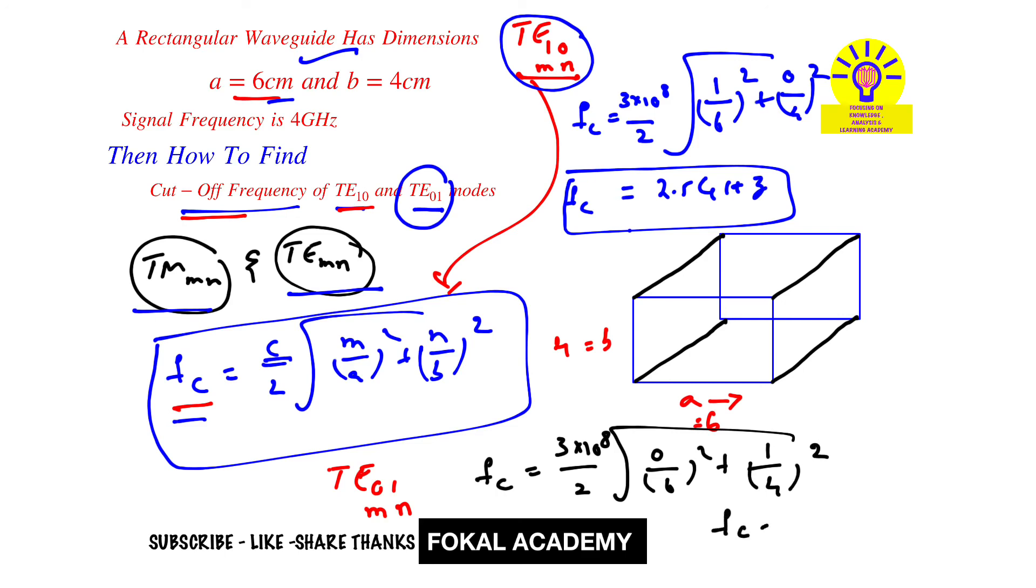By simplifying this, we get fc = 3.75 gigahertz. This is the cutoff frequency for TE01 mode. This is the process of simplification. Thanks for watching, please subscribe, like, and share.